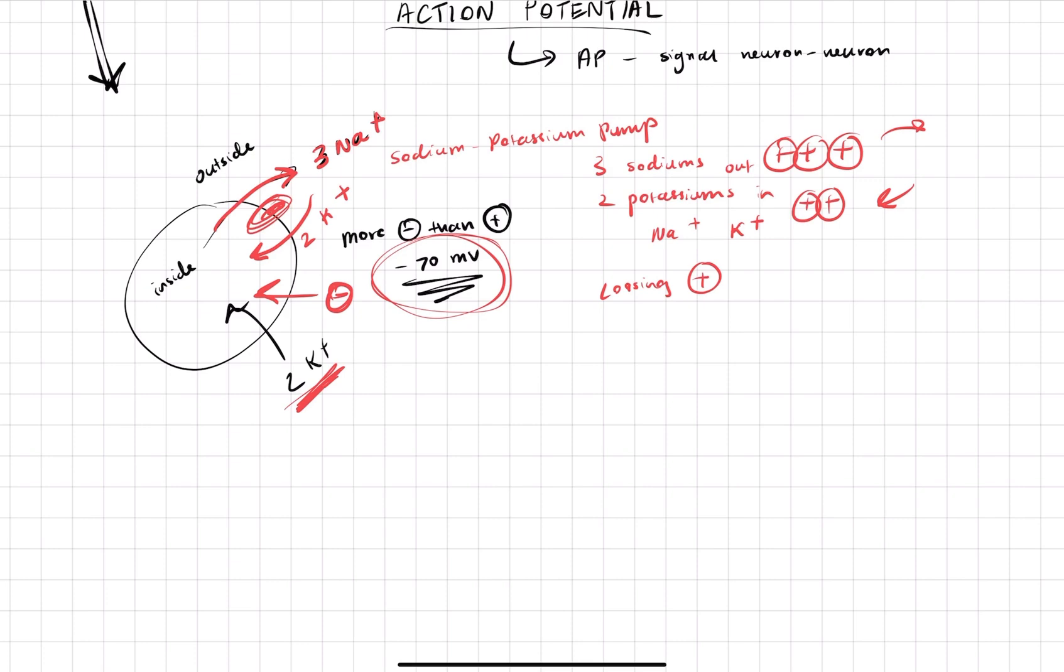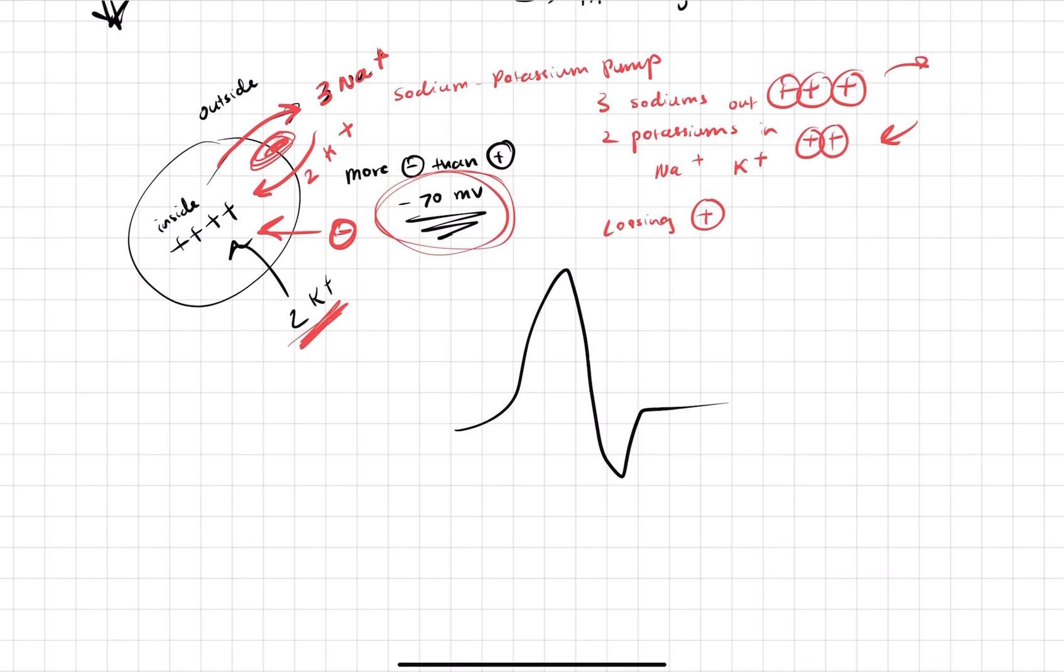When we are triggered for an action potential to occur, the inside of the cell is going to become more positive. And that's going to happen in these stages. So let's draw a little diagram over here. This is where we're usually chilling, negative 70 millivolts. This is around plus 55. This is where an action potential will start. So how is that going to start? Basically, we are going to have some sodium channels activate.